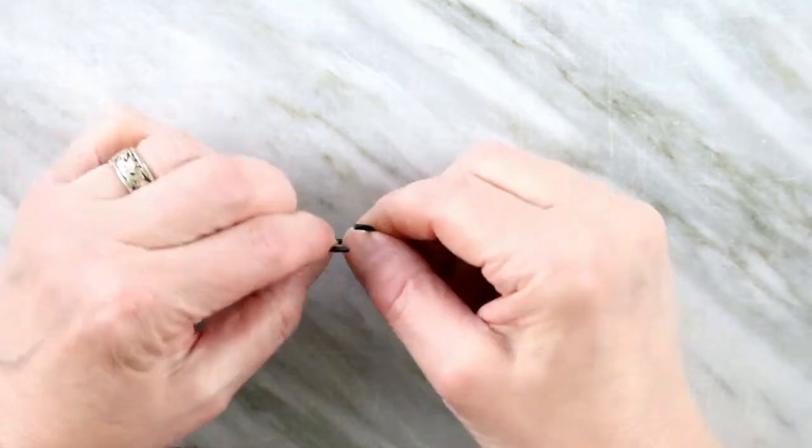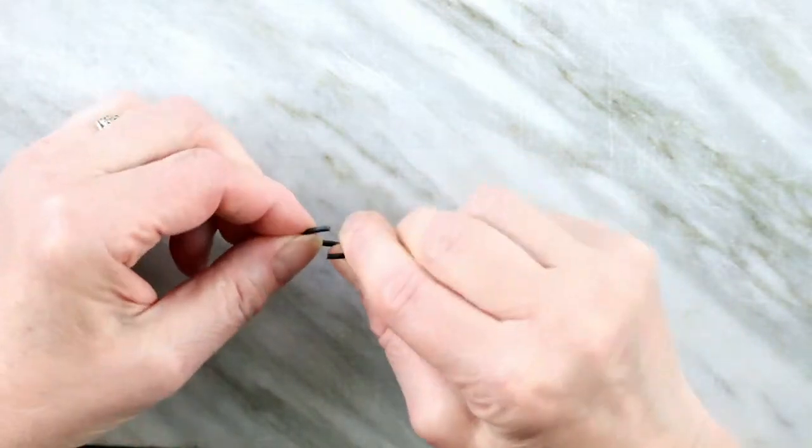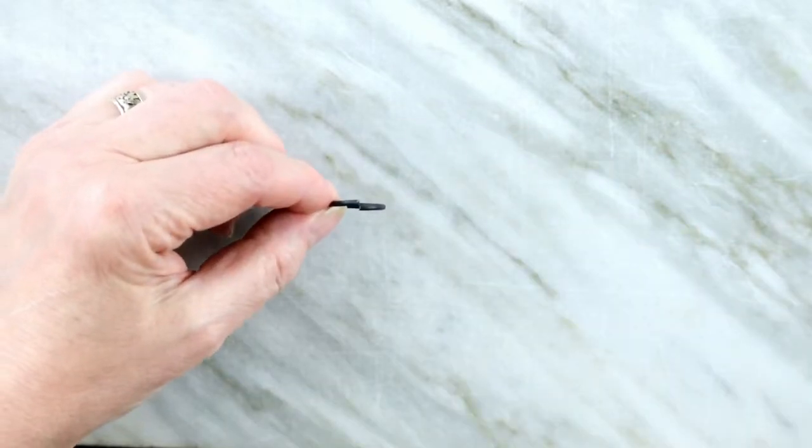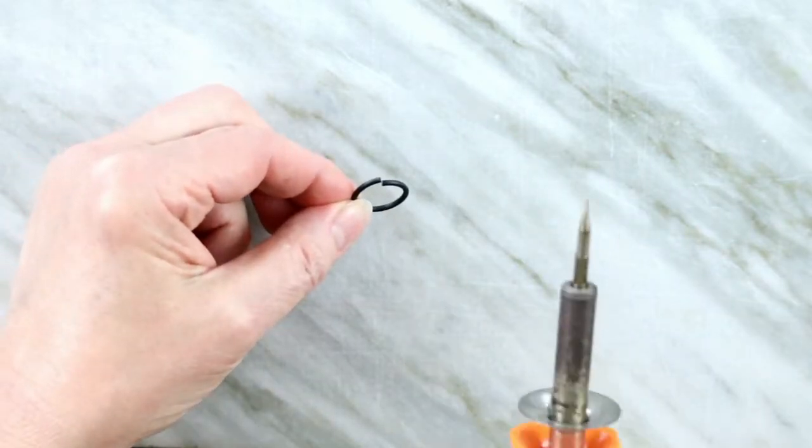Which brings us to how to seal jump rings. Should you want them to be super safe. Twist it till the two ends really meet.